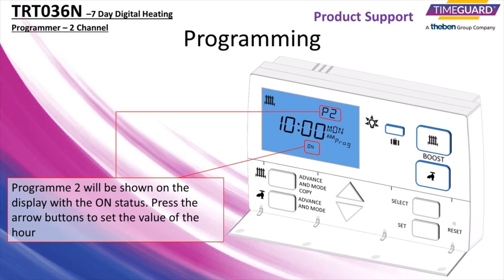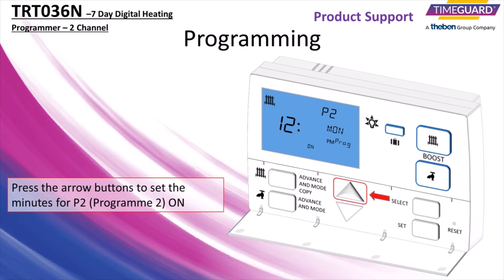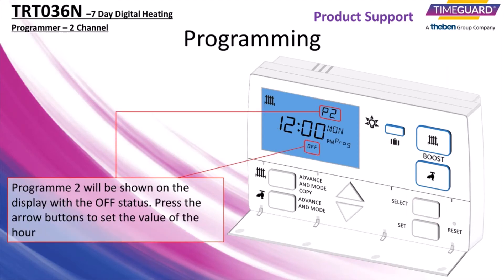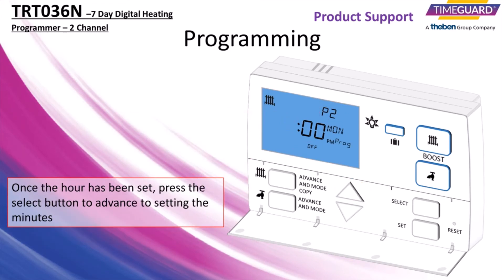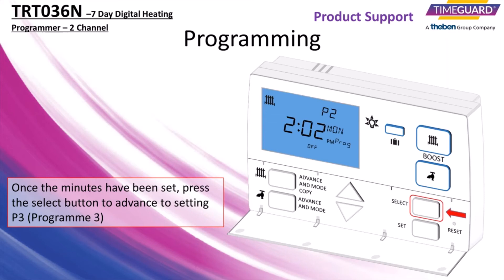Program 2 will be shown on the display with the ON status. Press the arrow buttons to set the value of the hour. Program 2 will be shown on the display with the OFF status. Once the hour has been set, press the select button to advance to setting the minutes. Press the arrow buttons to set the minutes. Once the minutes have been set, press the select button to advance to setting program 3.